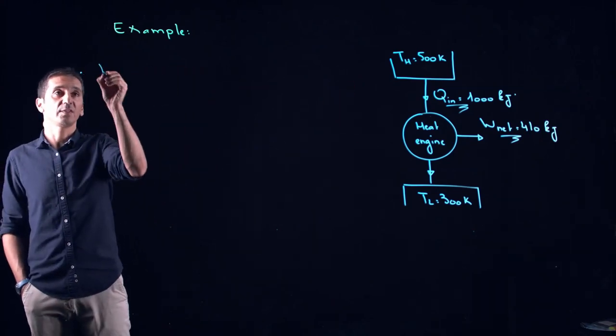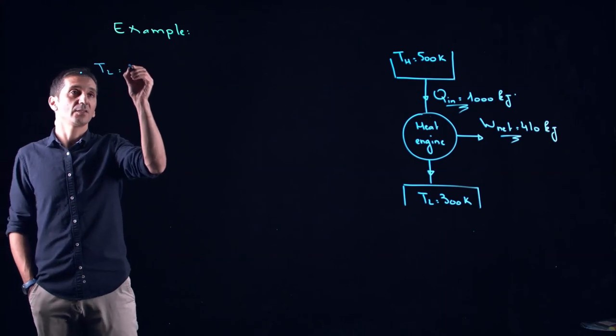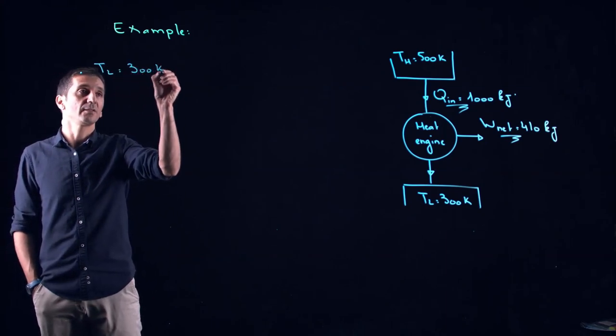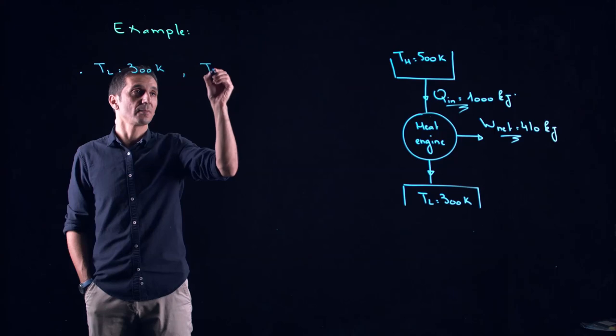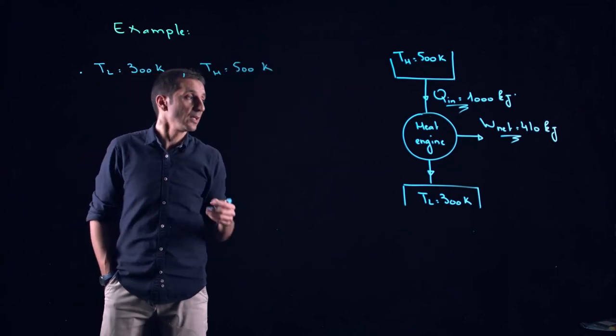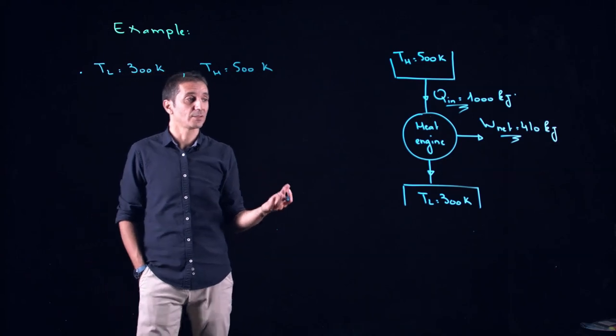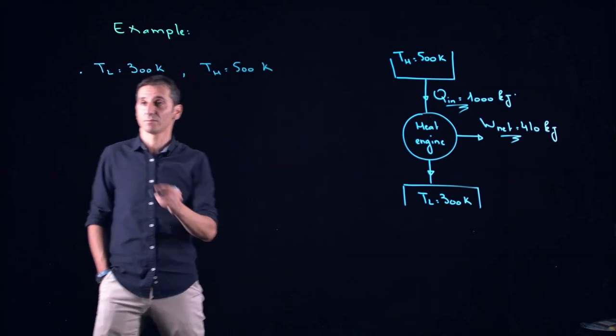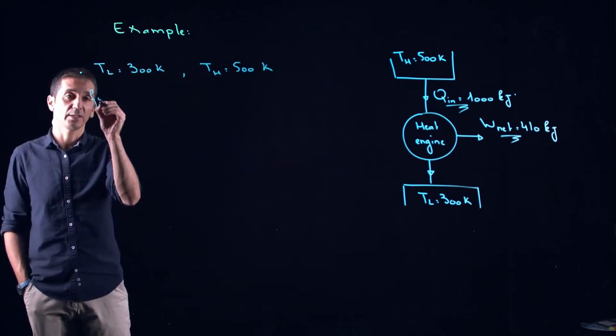So we have TL is equal 300 Kelvin, TH is equal 500 Kelvin. If now I'm assuming that this is a Carnot heat engine, so for a Carnot heat engine.